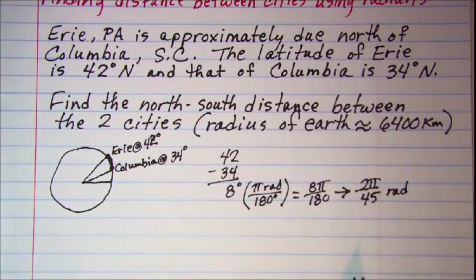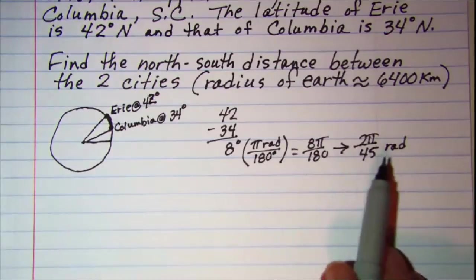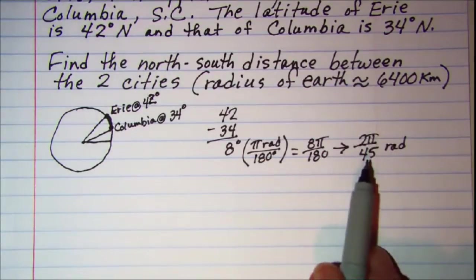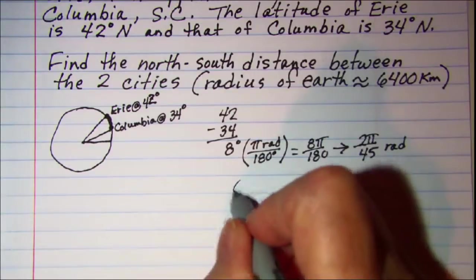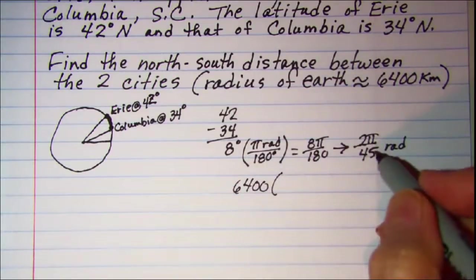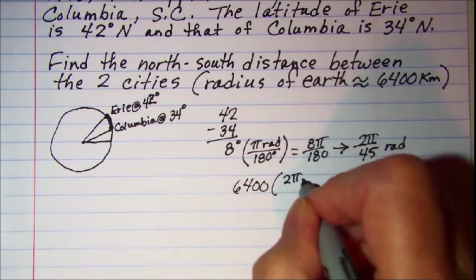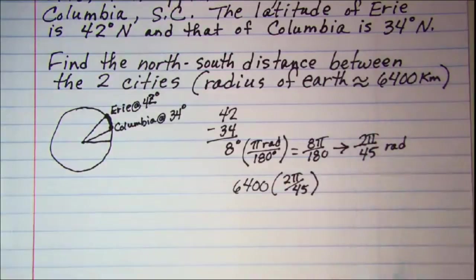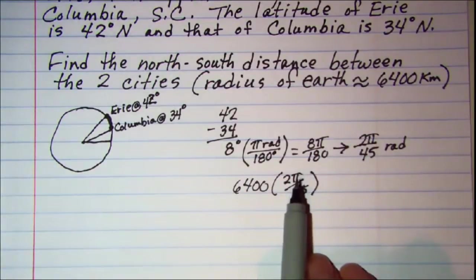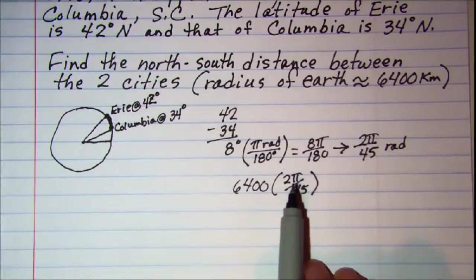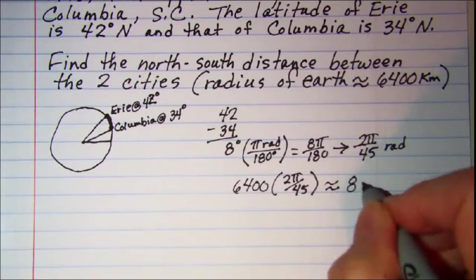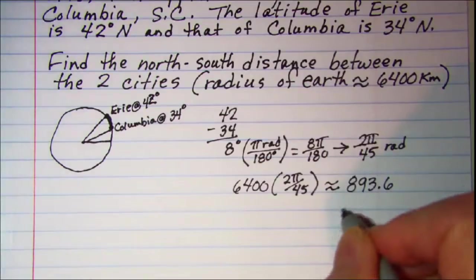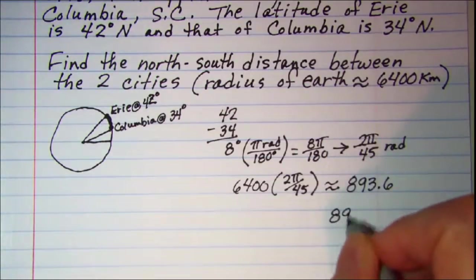Now we know that to find the arc length, we multiply our radius by our radian measure of the central angle. So we have a radius of 6,400 kilometers, multiplied by 2π/45 radians. Using the π key on our calculator — approximately 3.141592 — this product is approximately 893.6, or we can go with 890 kilometers.